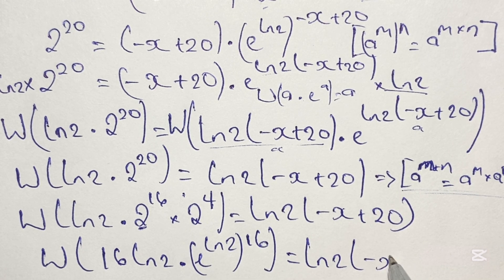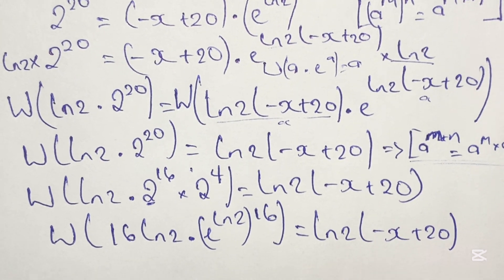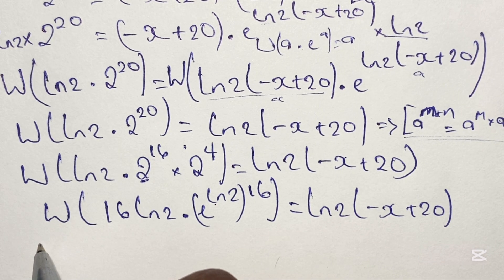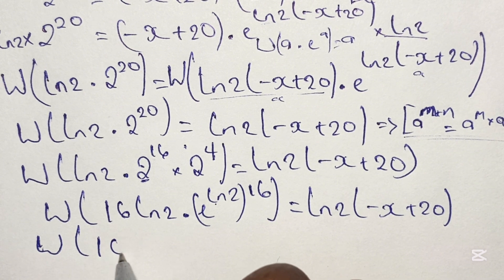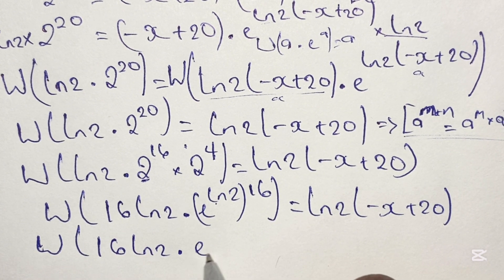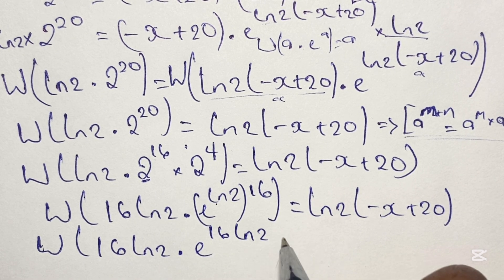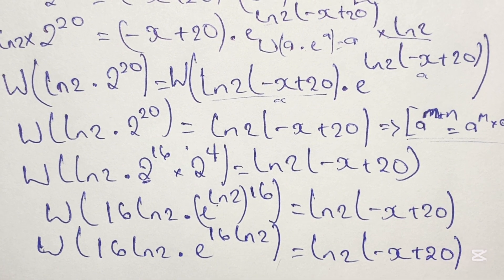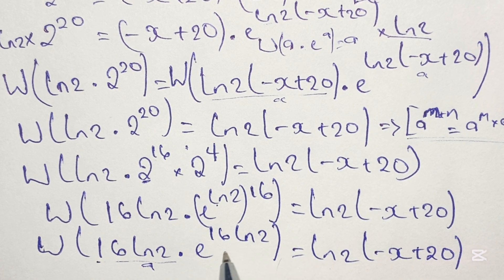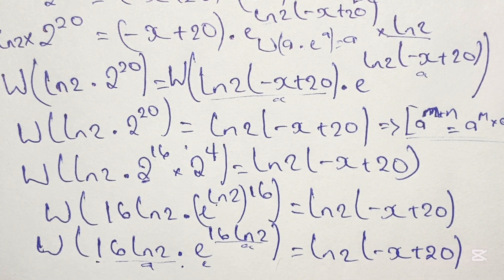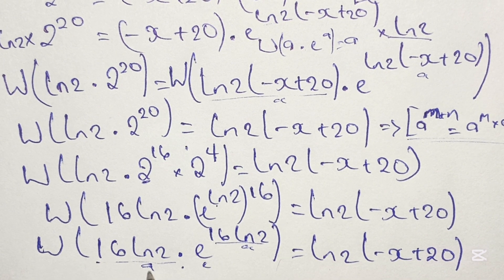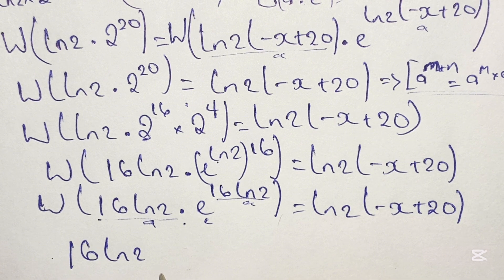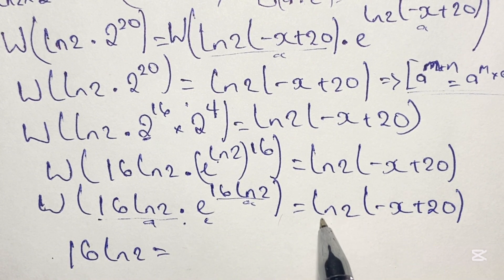Looking at the left side, using the law of indices we rewrite e to the power of ln 2 raised to the power of 16 as e to the power of 16 times ln 2. So we have W of 16 times ln 2 times e to the power of 16 times ln 2 equals ln 2 times negative x plus 20. Here 16 times ln 2 is a, we have e in the middle, and e is raised to the power of a. Applying the W function gives us a, so 16 ln 2 equals ln 2 times negative x plus 20.